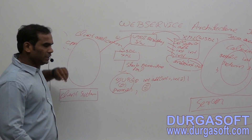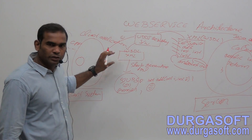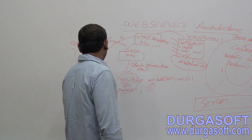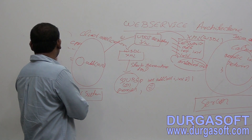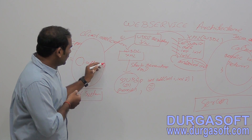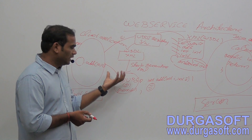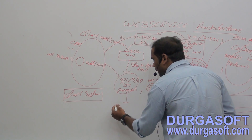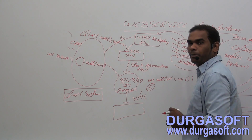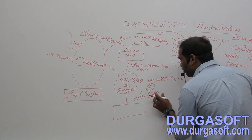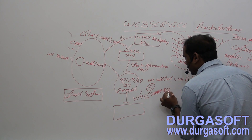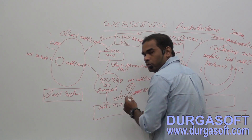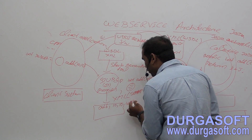After generating the stubs, the client creates a stub object — for example, Stub s = new Stub() — and invokes the add method by passing values like 10, 10, and gets the result. This method call goes to the stub. The stub, which has the method name and parameter values, will store the details in the form of an XML document. This XML document is called a SOAP request in web service terminology. The SOAP request contains the name of the method, parameter values, and parameter types.